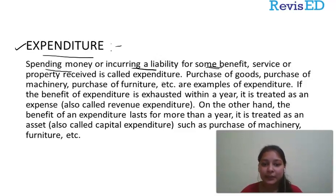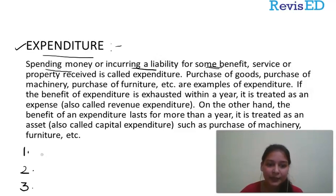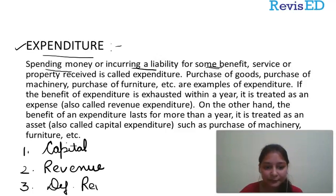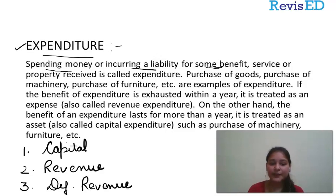In this video, we are going to discuss about types of expenditure as well. There are three types of expenditure: first is capital expenditure, second is revenue expenditure, and third is deferred revenue expenditure. So we are going to discuss each in detail.